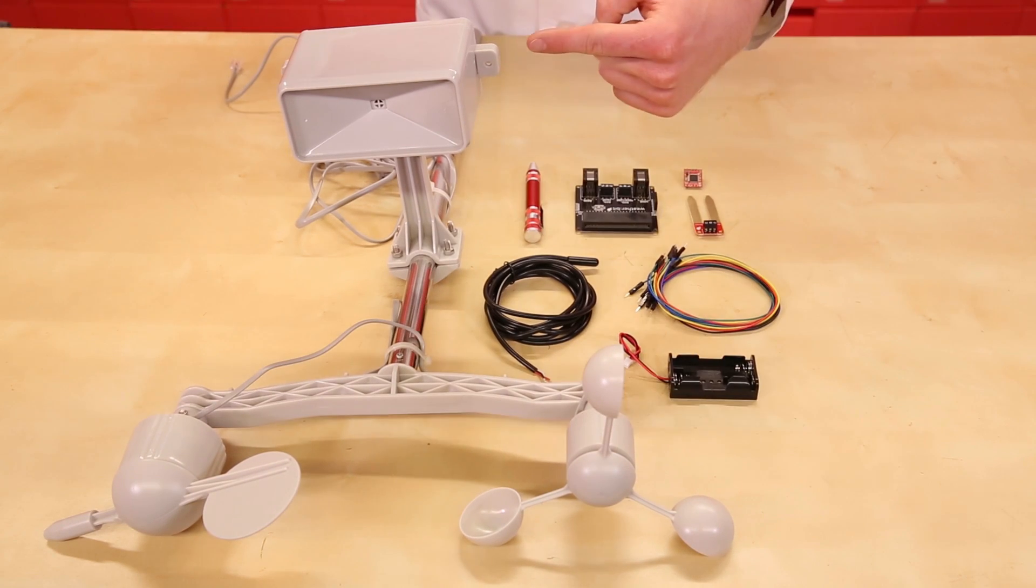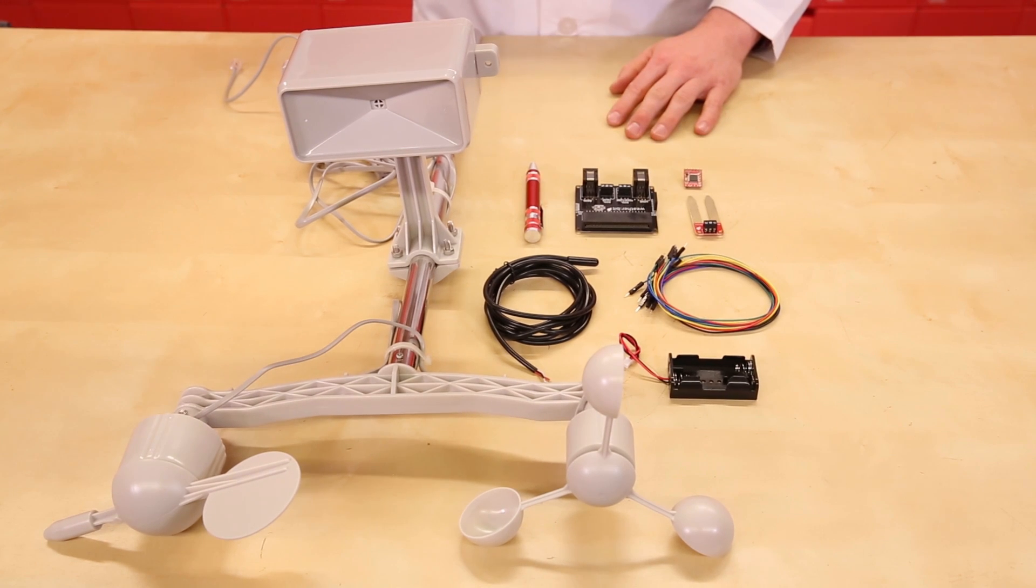The kit contains a set of weather meters, a waterproof temperature sensor, a soil moisture sensor, and the weather bit to connect all these sensors to your micro:bit.